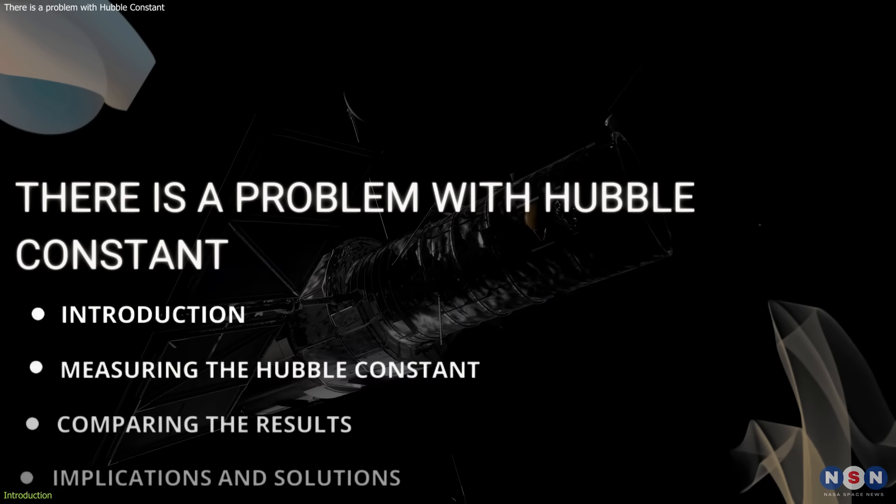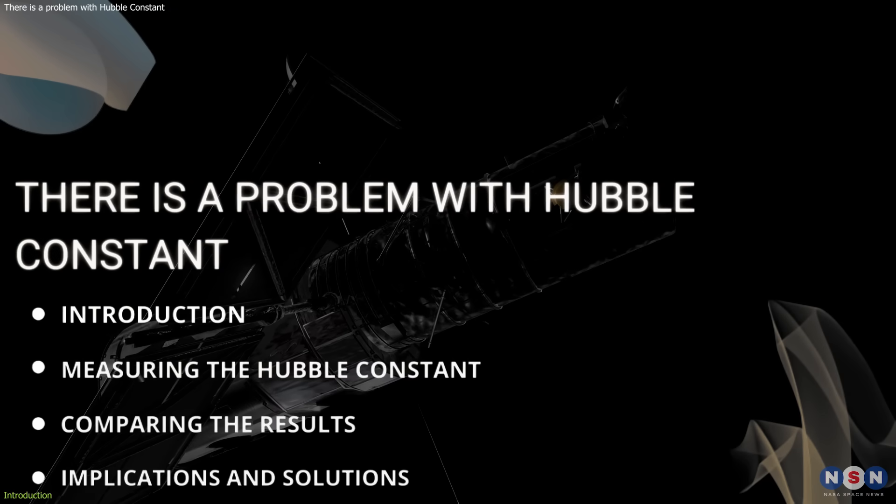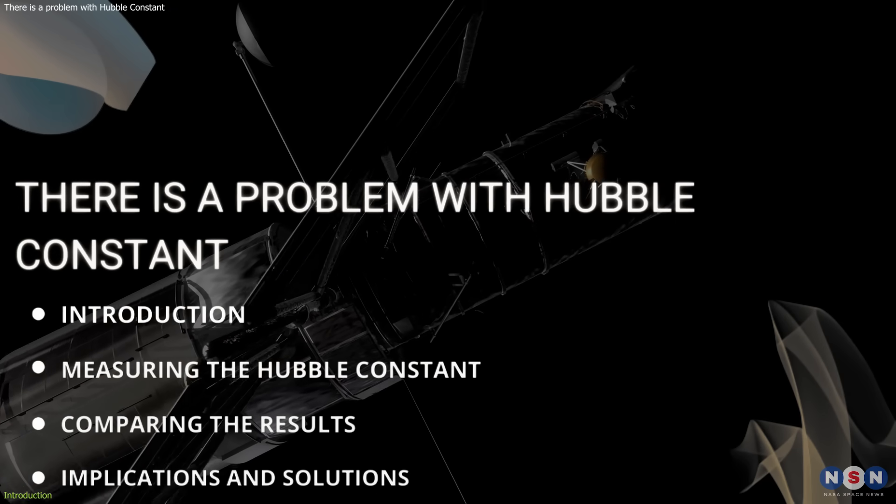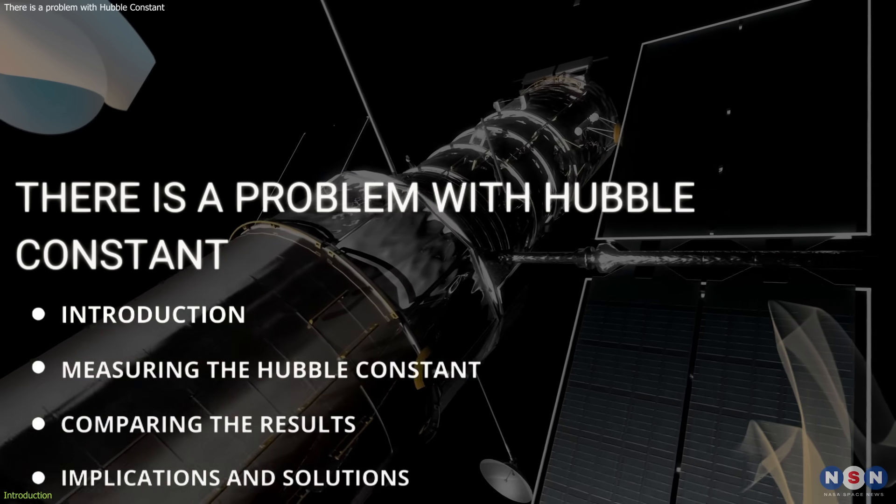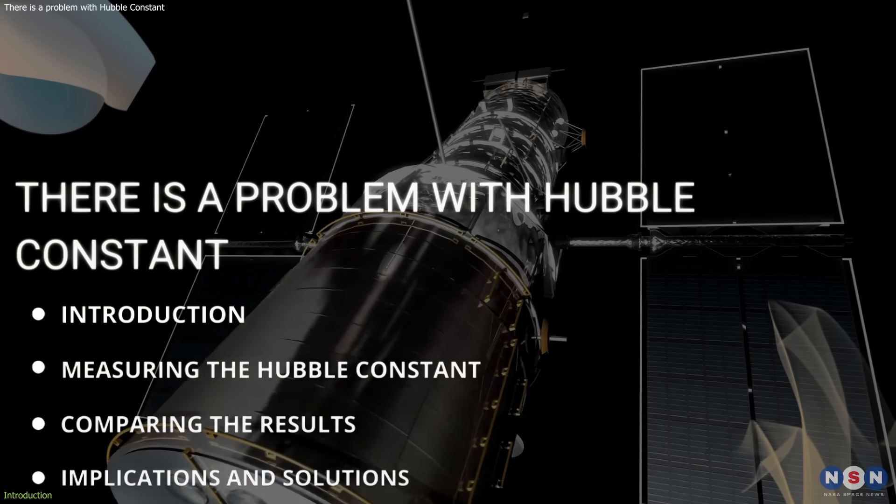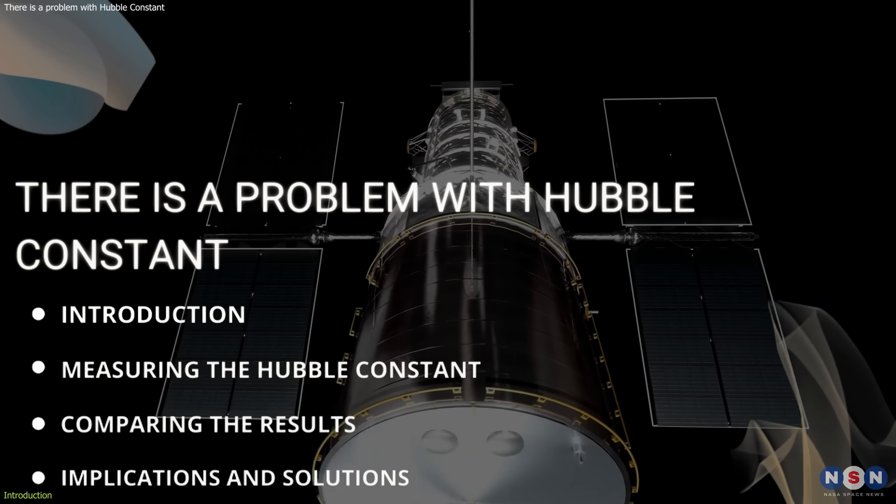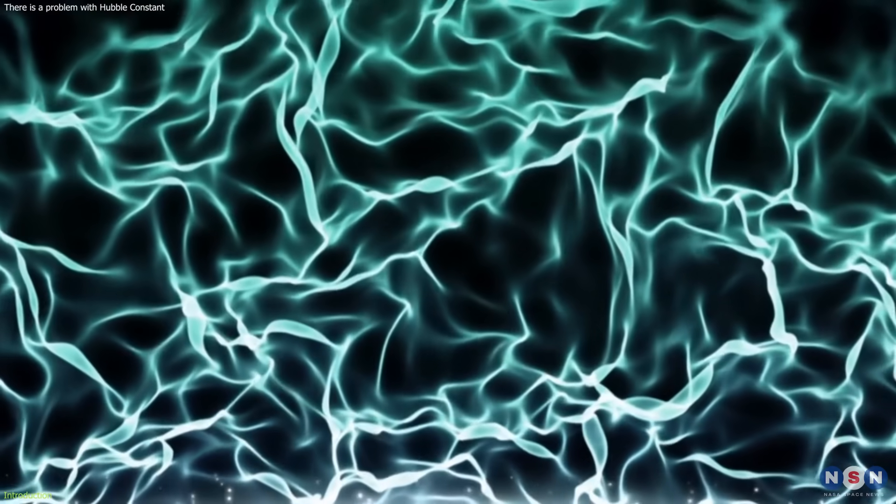In this video, we will explore the latest study that used the Hubble Space Telescope to measure the Hubble Constant and how it differs from the predictions of the standard cosmological model. We will also discuss some of the possible implications and solutions for this mystery, such as the nature of dark energy,